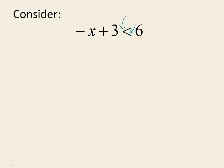Inequalities behave very much the same as equations in the sense that you can add and subtract things from both sides, and you can multiply and divide both sides. But there are one or two differences. If we wanted to solve this inequality, we want to get x by itself, so we start off by subtracting 3 from both sides. That leaves us with negative x is less than 3.